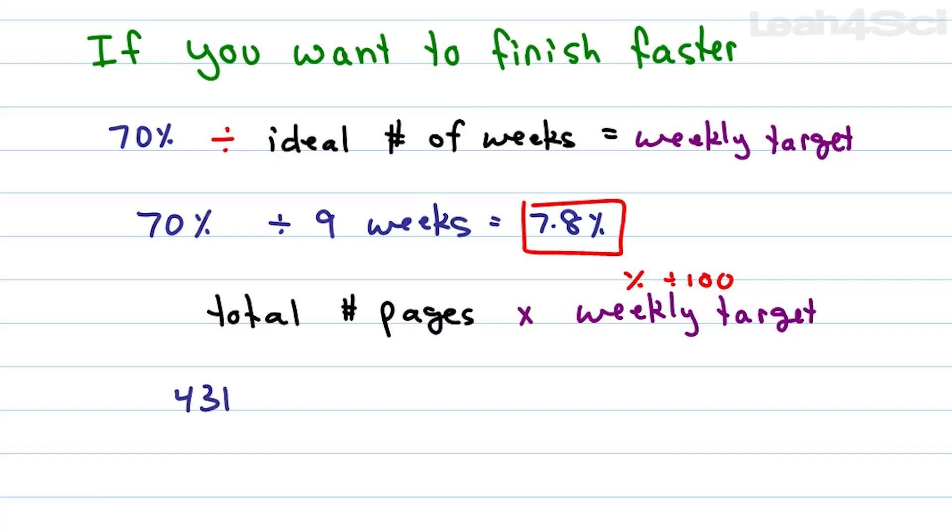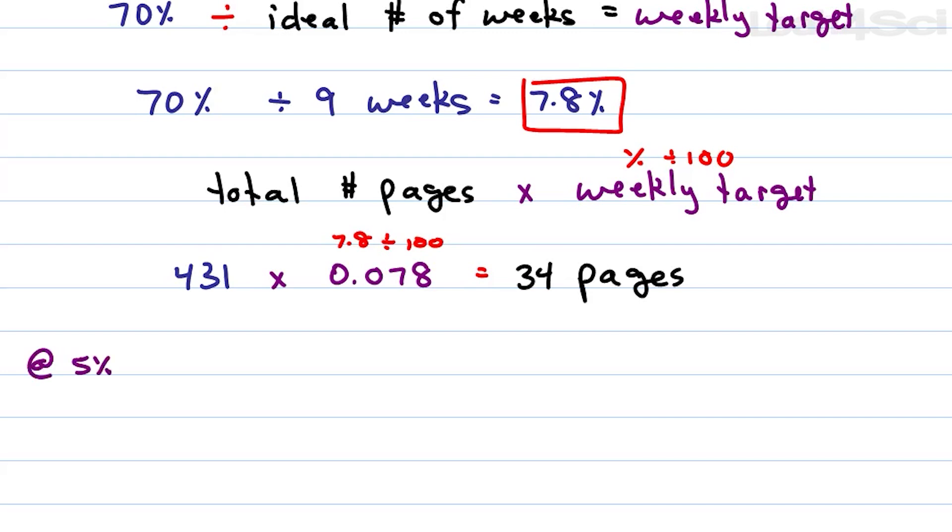If we had 431 pages total and we want to complete 7.8% per week, we do 431 times 0.078 or 431 times 7.8% divided by 100. This comes to a weekly goal of 33.6 and change, which we're going to round up to 34 pages. Just so you understand the difference, at 5% we were looking at 431 times 5 divided by 100 or times 0.05, which was only about 22 pages per week. Look at the difference and ask yourself, is this number realistic?